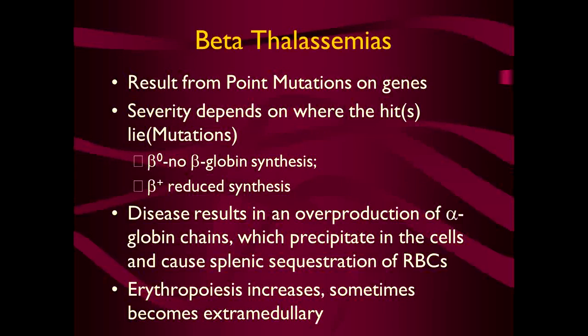Beta-thalassemias result from point mutations on the genes. The severity depends on where the mutation lies. In beta-zero, there is no globin synthesis; in beta-plus, there is reduced synthesis. The disease results in overproduction of alpha-globin chains, which precipitate in the cells and cause splenic sequestration of the RBCs. Erythropoiesis increases and is sometimes extramedullary as well.